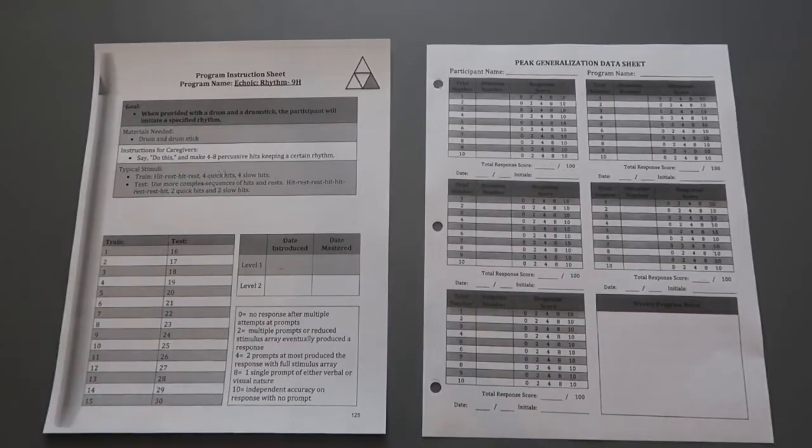So this is a program instruction sheet demonstration along with transferring over to the data sheet. This is a generalization program from PEAK. I picked out echoic rhythm 9H to use for this demonstration, and I'm just going to show you how to fill out the program instruction sheet for this particular program and then how to transfer those stimuli for train and test over to the generalization data sheet.